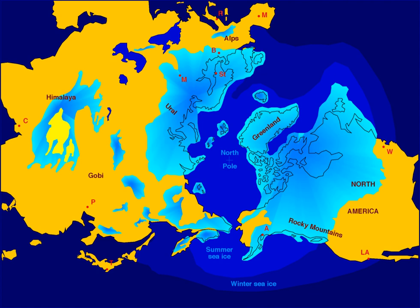The current interglacial began between 15,000 and 10,000 years ago, causing the ice sheets from the last glacial period to begin to disappear. Remnants of these last glaciers, now occupying about 10% of the world's land surface, still exist in Greenland, Antarctica, and some mountainous regions.